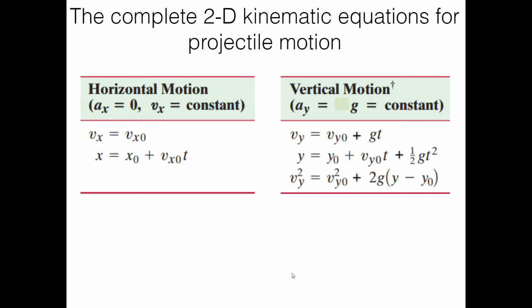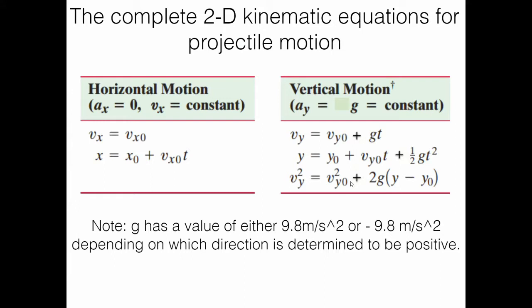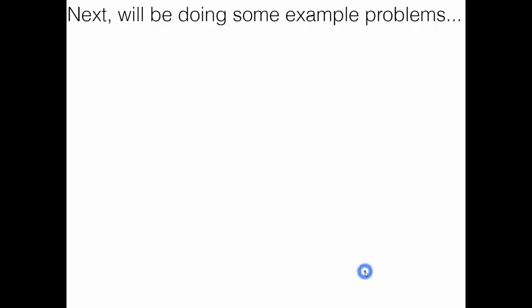Here they all are as a complete set. For horizontal motion you have those two equations, and the first is really just a statement that velocity in the x-direction is constant. Notice g has replaced a in the vertical equations. g stands for positive or negative 9.8 m/s² — we will set positive and negative directions in our problems, and that determines the sign of g.